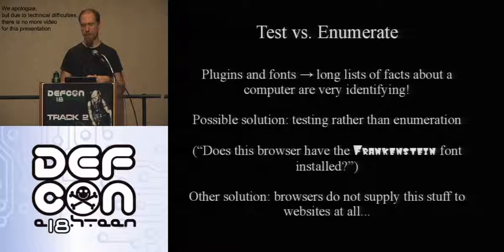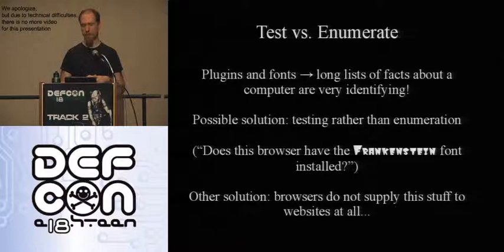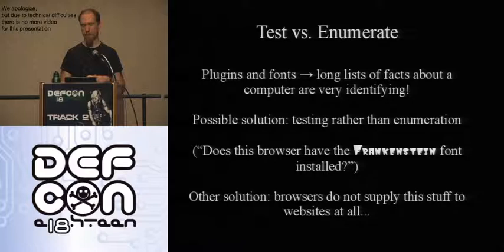Another lesson: if you're designing an API that runs inside a browser, you should never offer a call that returns a gigantic list of system information about the machine. This was the problem with the plugin list — calling navigator.plugins gives back all plugins and their version numbers — and that makes a lot of people unique. Similarly, don't return a list of all fonts. If you really need to display a particular font, make the caller ask about that specific font rather than querying all fonts at once.